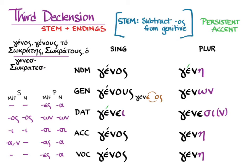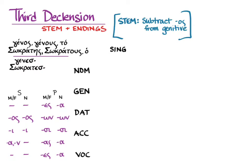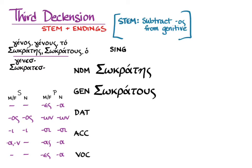The accent is persistent, and so it behaves pretty much as you expect, except in the genitive plural where, because of the contraction, and it would have been on one of those two contracted vowels, it stays on the contracted syllable, giving you γενῶν. That is how it works with neuter nouns of the type γένος, γένους, τό. With nouns like the name Σωκράτης, we only need the singular. The genitive singular Σωκράτους has that -ους ending because of a hidden stem in -s.